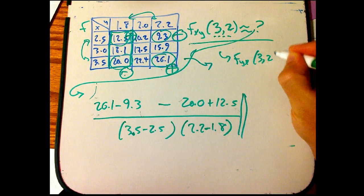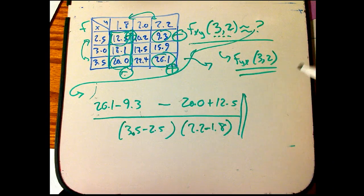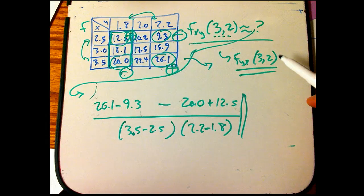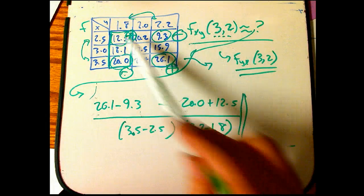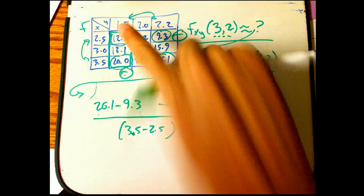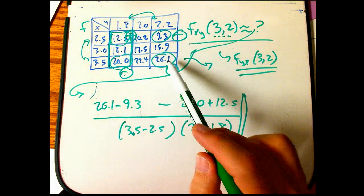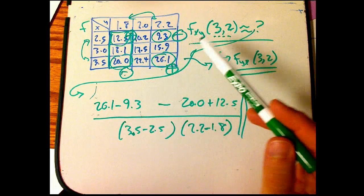That if I had done fyx at (3,2), I would get the same answer. Well, let's think about it. If I had done fyx, what gets changed? The roles of x and y just get flipped. So I kind of flip it across this diagonal. But if I flip it across the diagonal, I'm going to get exactly the same pattern.